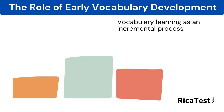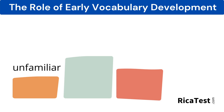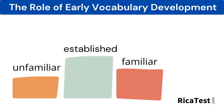Children learn the meanings of words incrementally, yet there are three levels of vocabulary development for all students. They include the unfamiliar stage, where the student is totally unfamiliar with a word; the familiar stage, where the student knows a word on some level — they may have heard it before but don't know exactly how to use it in a sentence; and the established stage, where a student fully understands the word and can use it in a sentence. In order for children to work toward word establishment, teachers need to provide more examples of the word in context, which results in greater depth of understanding.